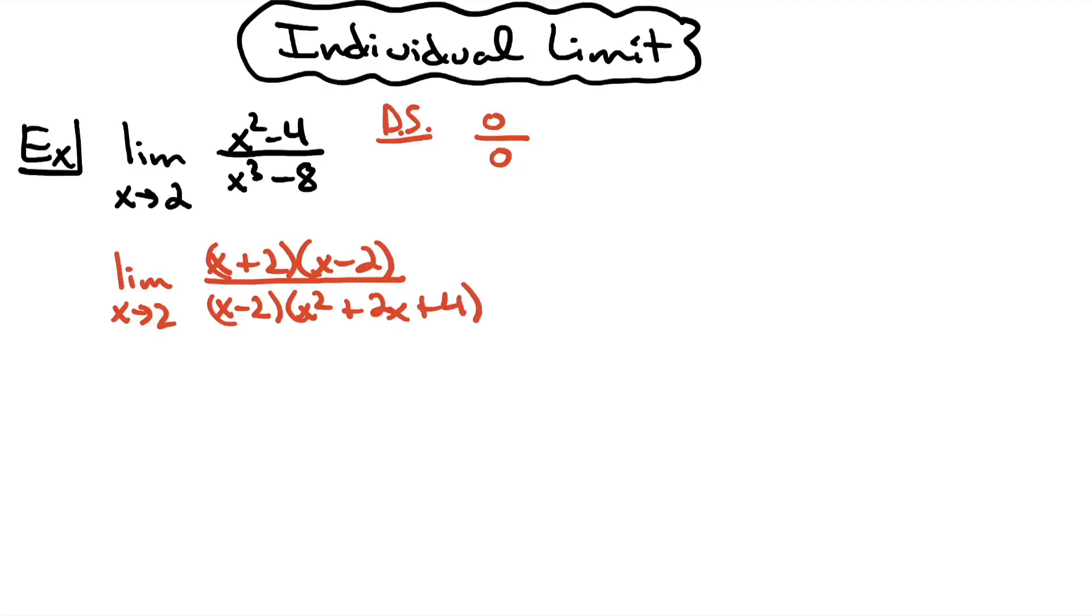From here, you can see that your x minus 2 and x minus 2 crosses out, and that's going to leave you with the opportunity to again do a direct substitution.